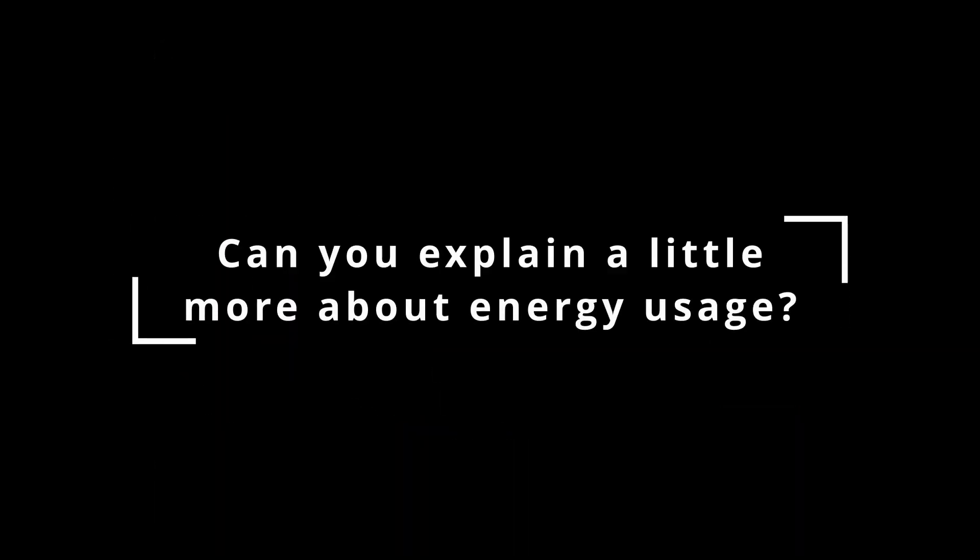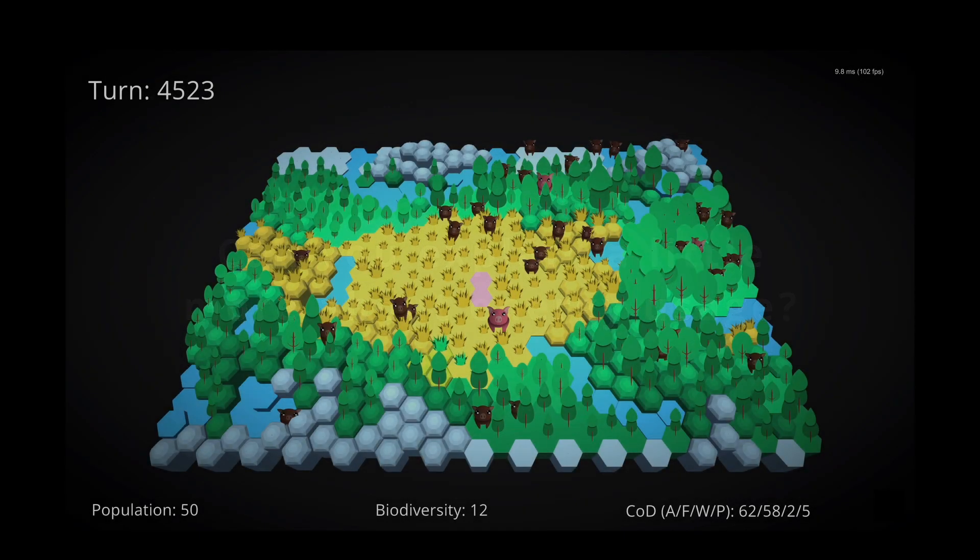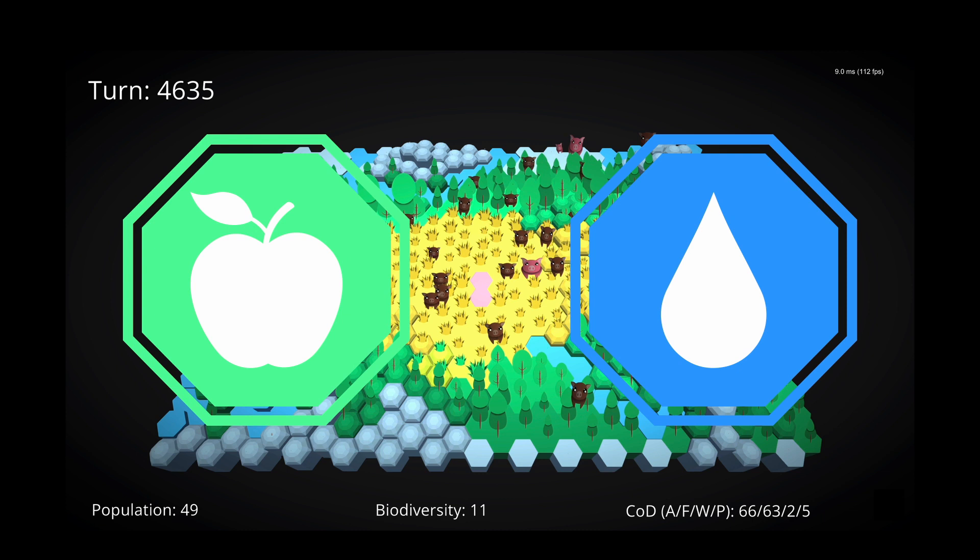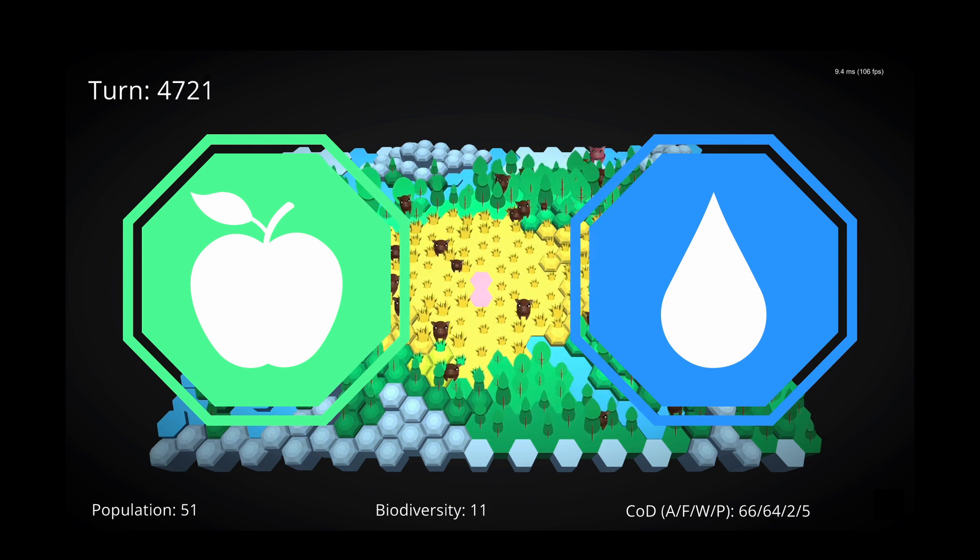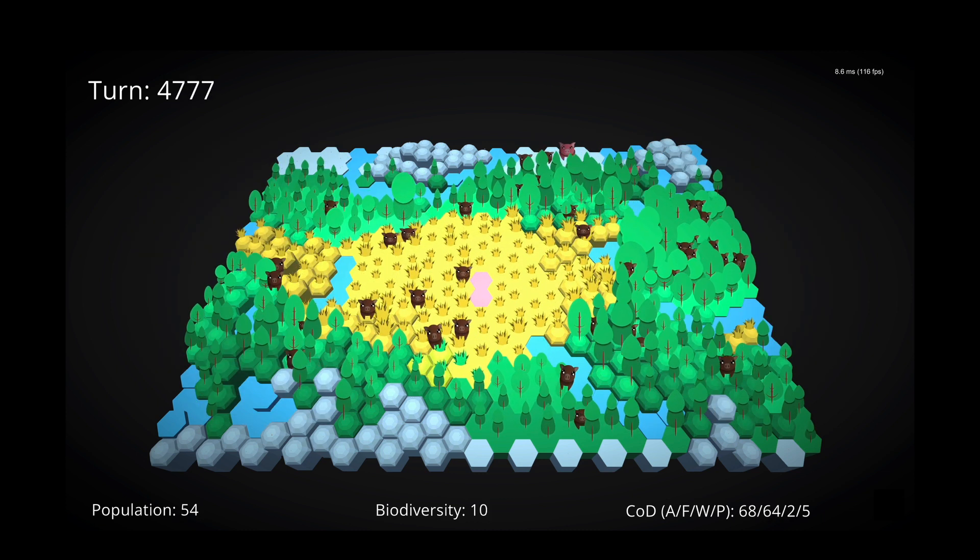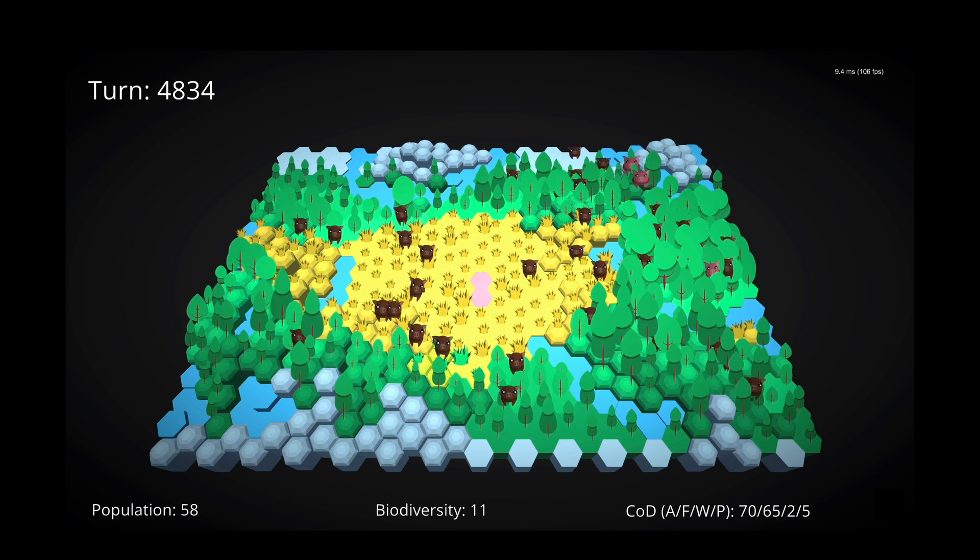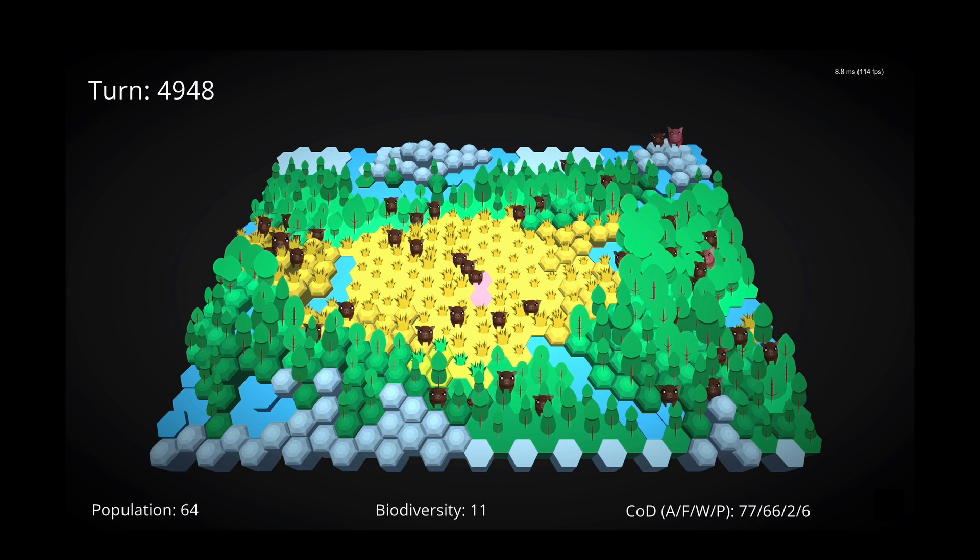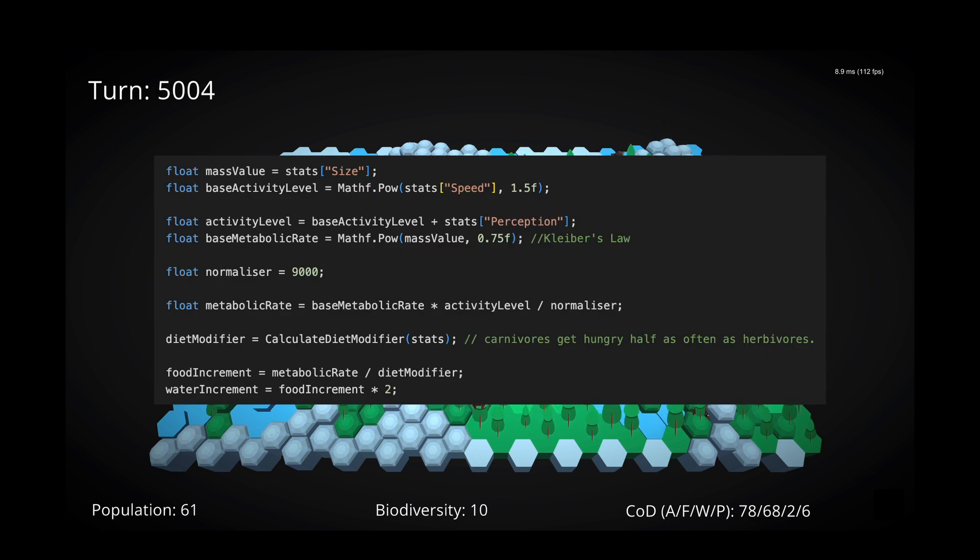Can you explain a little more about energy usage? For the moment, creatures don't sleep, so energy is represented only in terms of food and water. Each turn, creatures hunger and thirst will build towards a maximum value. This represents death by starvation and dehydration. The highest value is what creatures will prioritize on any given turn. The rate of increase for hunger and thirst is based on two factors, a creature's base metabolic rate, and their level of activity, each of which is calculated using these equations.